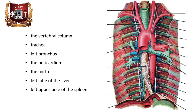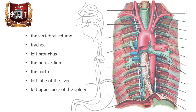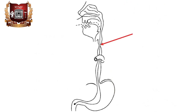Throughout the esophagus there are three anatomical constrictions: at the point of transition of the pharynx into the esophagus, at the level of the division of the trachea into bronchi, and at the passage of the esophagus through the diaphragm.